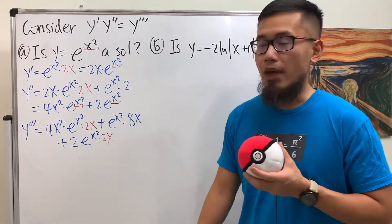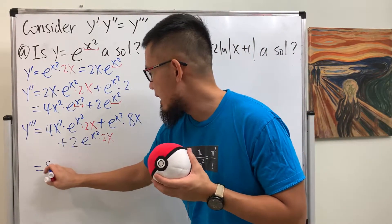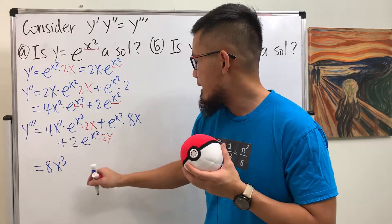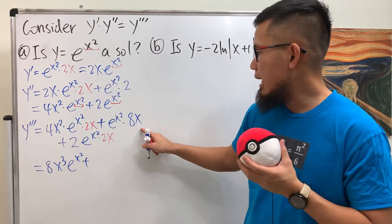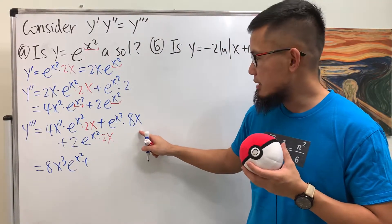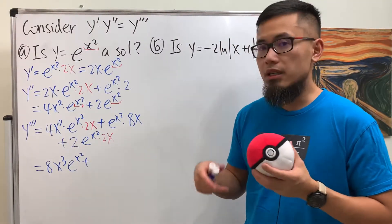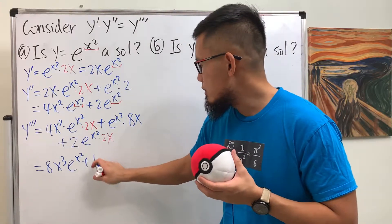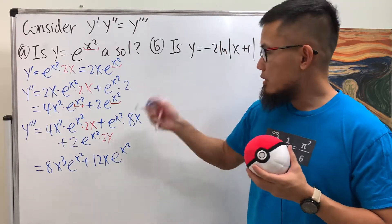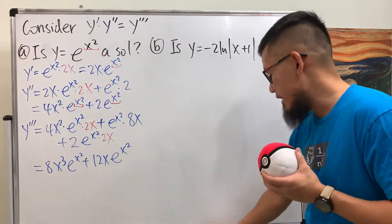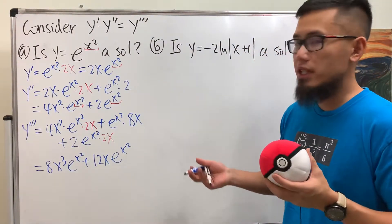Simplifying: the first part gives 8x cubed · e to the x squared. Combining the middle terms: 8x plus 4x gives 12x, so we get 12x · e to the x squared. Therefore y triple prime equals 8x cubed · e to the x squared plus 12x · e to the x squared.